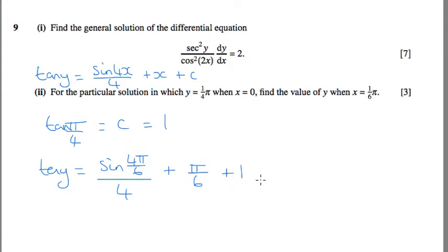So when I type all that in: sin of 2 pi over 3, all divided by 4, plus pi over 6, plus 1.